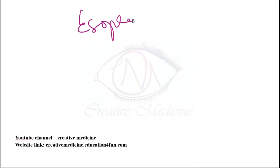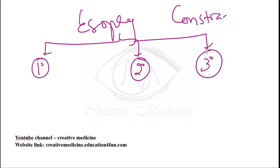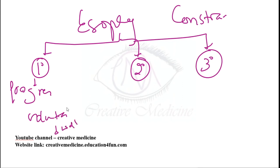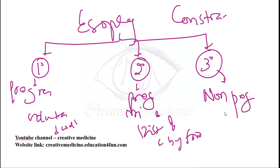There are three types of esophageal contractions. Primary contractions are progressive, triggered by voluntary swallowing. Secondary contractions are also progressive, triggered by irritation and distension by food. Tertiary contractions are non-progressive and non-peristaltic spasmodic contractions.